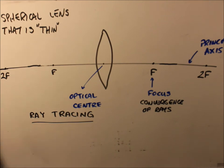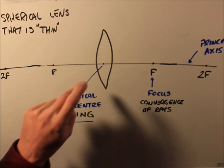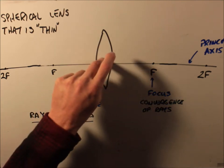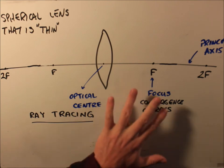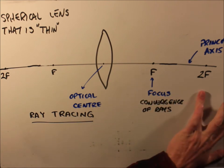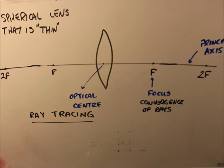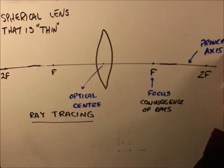The observer is on one side and the object on the other. The point at the center of the lens is the optical center. We also have the focus, and twice the focal distance is 2f on both sides. The line through the center is known as the principal axis.